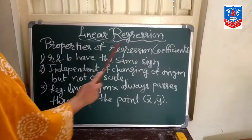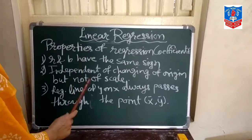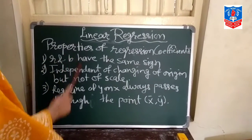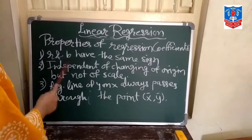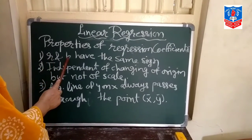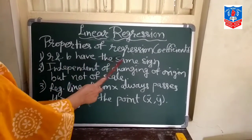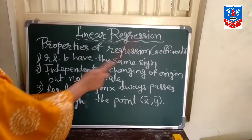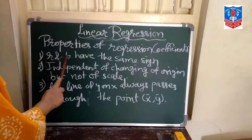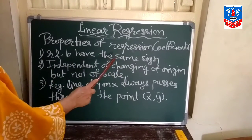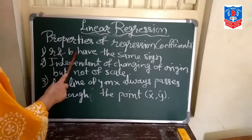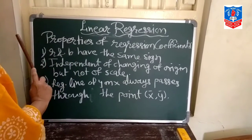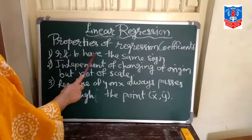The first topic of today's session is properties of regression coefficients. Three properties are very simple. Number 1: R and B have the same sign. R, that is the correlation coefficient, and B, that is the regression coefficient — both always have the same sign. If positive then both will be positive, and if negative then both will be negative.